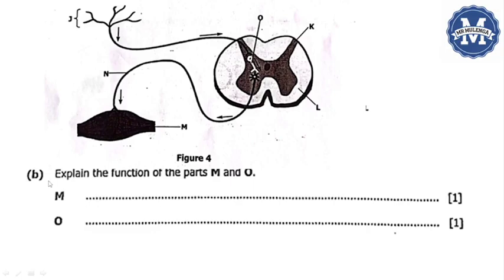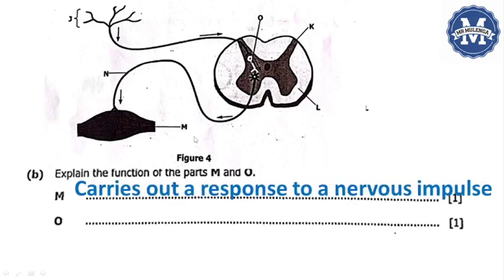I have come to question 4B. Explain the function of the parts M and O. We need to explain the function of the part labeled M, which is an effector muscle here. What is the function of this part labeled M? The function of the part labeled M just carries out a response to the nervous impulse.